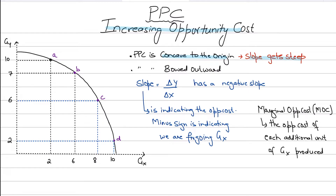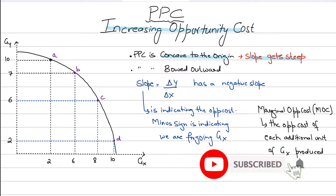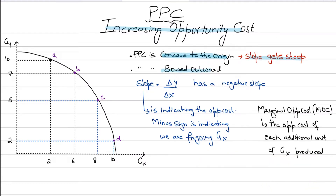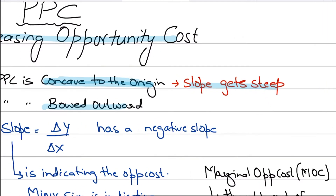Let's look at the shape of the PPC. The shape of the PPC is basically bowed outwards, or you could say it's concave to the origin. For such a PPC that has a bowed outward shape or concave to the origin, as you're going down the curve, your opportunity cost is increasing.